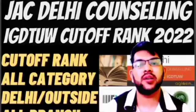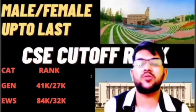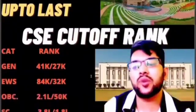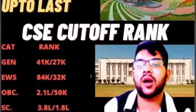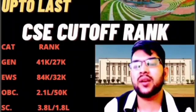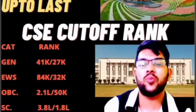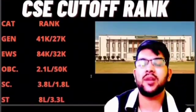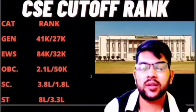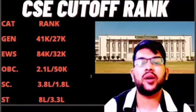IGDTUW cutoff rank 2022 for CSC — General: 41,000 and 27,000 for homestead and other estates. EWS: 84,000 and 32,000. All ranks are CRL ranks because in JAC Delhi and JAC Chandigarh counseling they consider your CRL rank, though reserve category candidates get the benefit of their category. OBC: 2.1 lakh and 50,000; SC: 3.8 lakh and 1.8 lakh; ST: up to 8 lakh for homestead and 3.3 lakh for other estates.